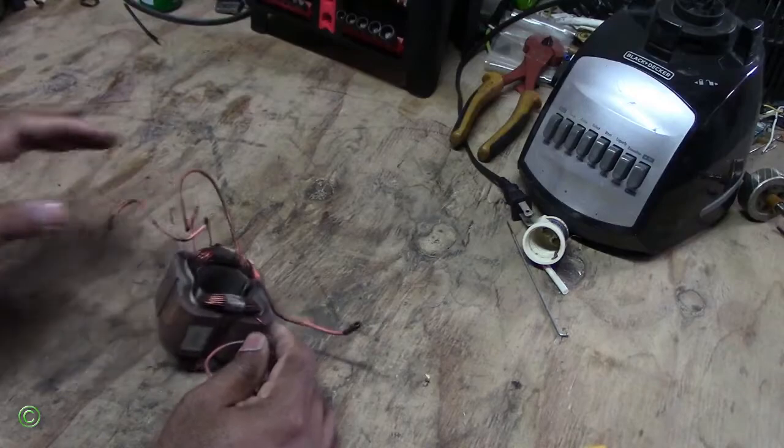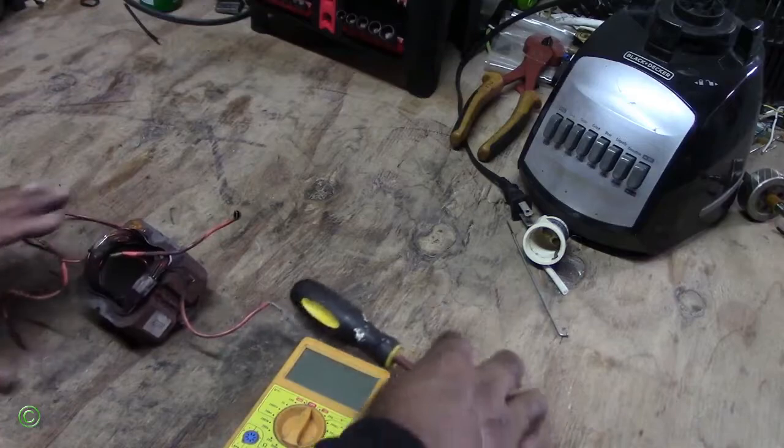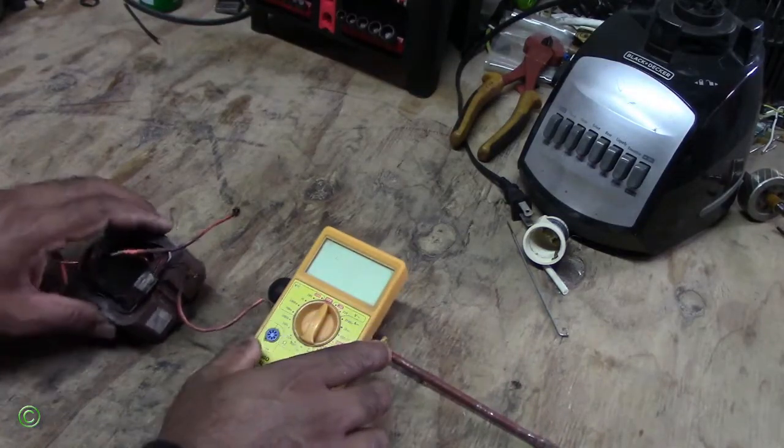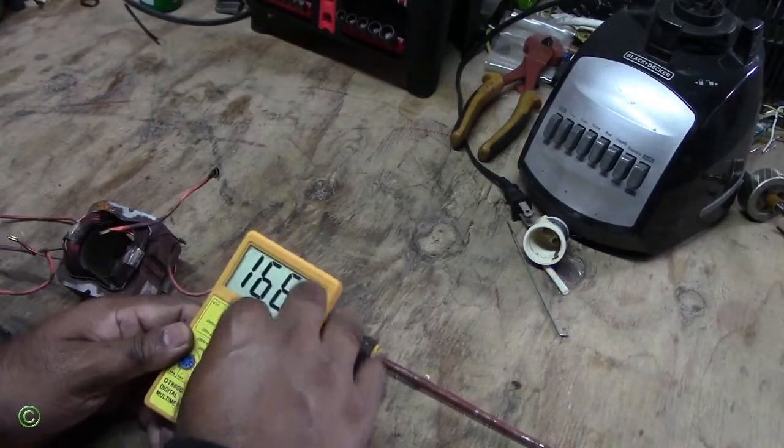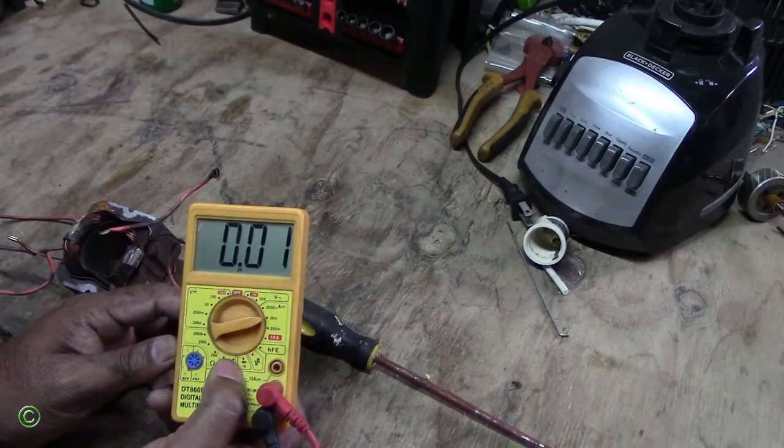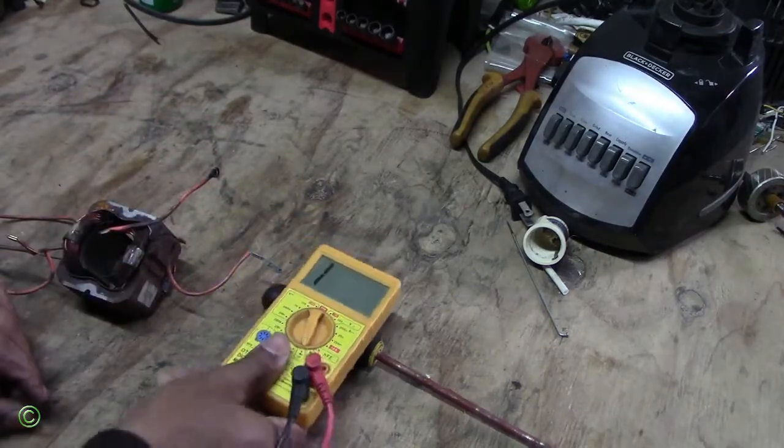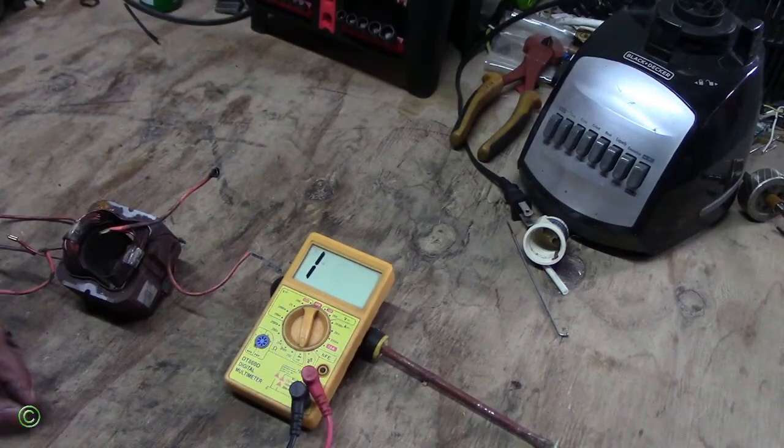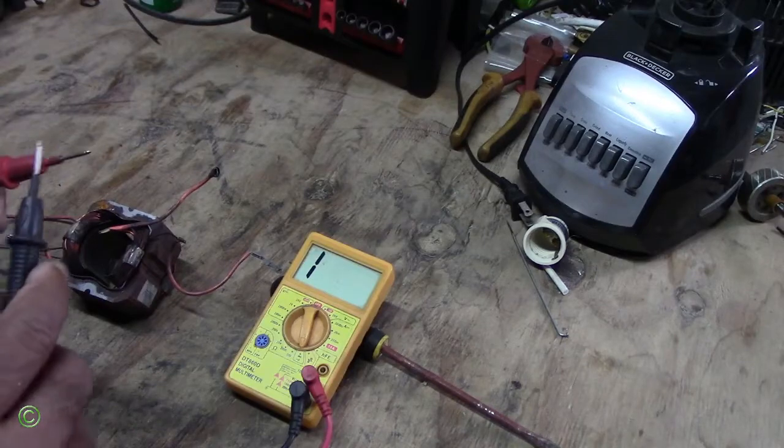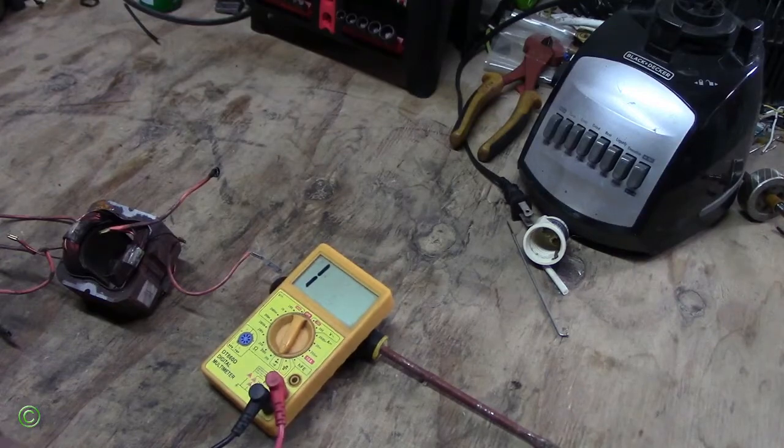Now we're going to check for continuity. You need a multitester and you set it on the diode setting for continuity testing. When you test, you're getting a reading.